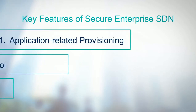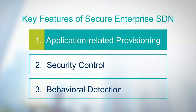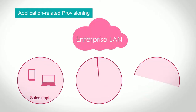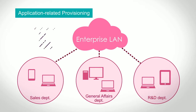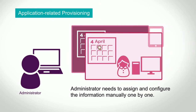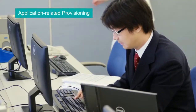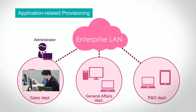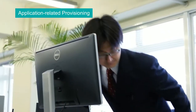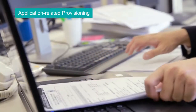Secure Enterprise SDN has three key features. The first is application-related provisioning. When personnel are transferred within a company, administrators had to gather information such as user section, device information, and working hours from separate databases under a legacy network, and then assign and configure the information manually one by one. Today, since it has become so normal for a single user to own multiple devices, administrators have to consume a lot of time for maintenance and configuration.